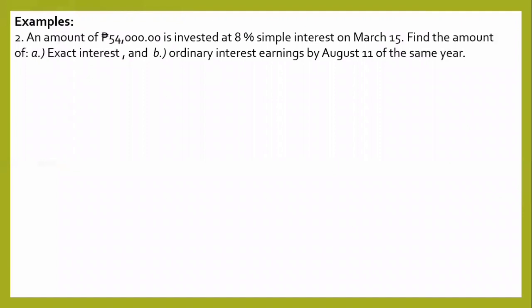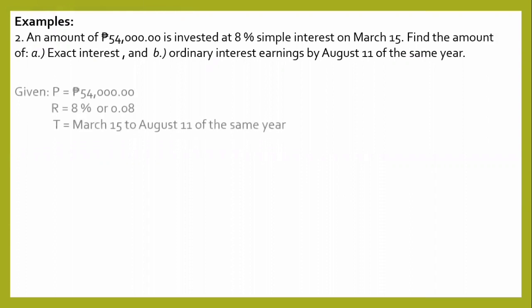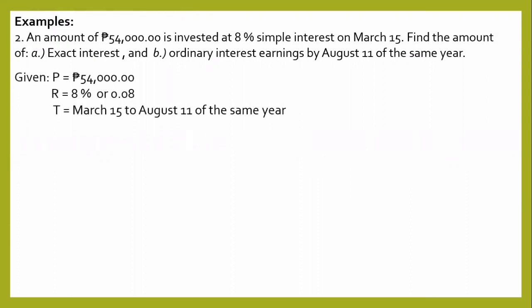Example number two: An amount of 54,000 pesos is invested at 8% simple interest on March 15. Find the amount of A, the exact interest, and B, the ordinary interest earned by August 11 of the same year. The given values are: P is equal to 54,000 pesos; R is equal to 8% or 0.08; and time T runs from March 15 to August 11 of the same year.